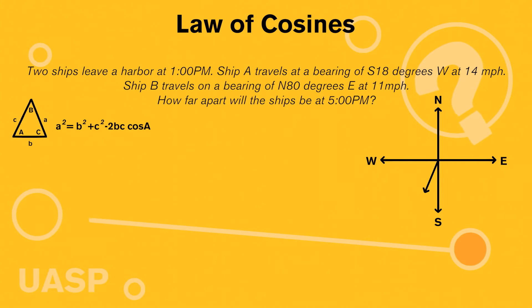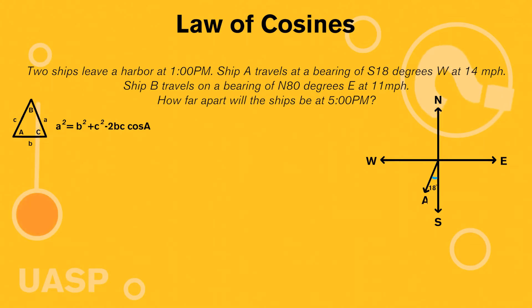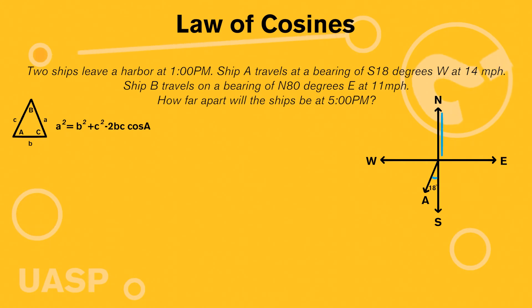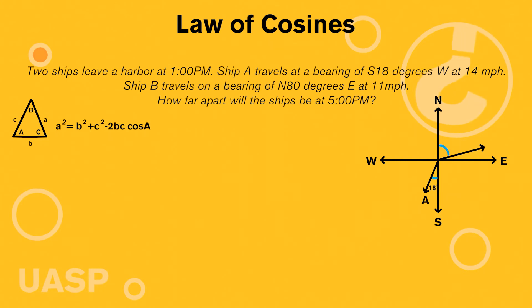The 18 degrees west is going to look like this — so this angle here is 18 degrees. That's ship A. For ship B, they're on a bearing of north 80 degrees east, so we're going up towards north, and then 80 degrees east — which is pretty significant — so it's going to look like that, and this is our 80 degree angle. This is ship B.